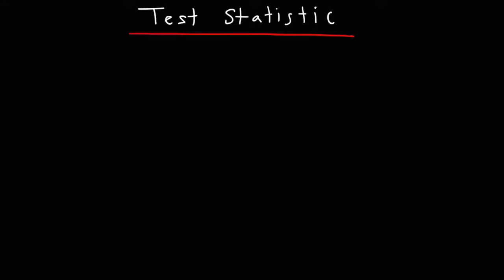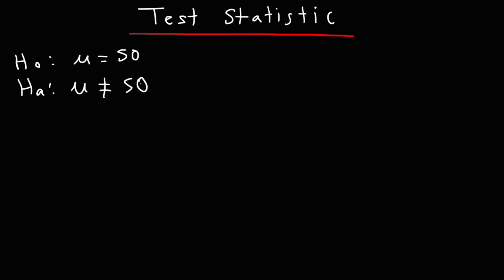Let's say that you're solving a problem associated with hypothesis testing. The null hypothesis is that the mean is 50. For the alternative hypothesis, someone believes that the mean is not 50 and decides to conduct a test. How do you know if the null hypothesis should be rejected or not rejected?